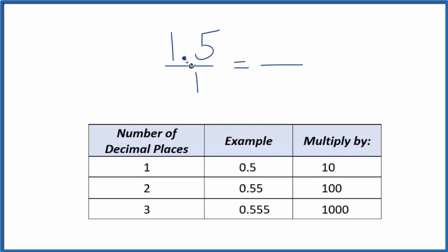When we look at 1.5, we have one decimal place. So one decimal place means we're going to multiply by 10. 10 times 1.5, that's 15. So now we have a whole number,